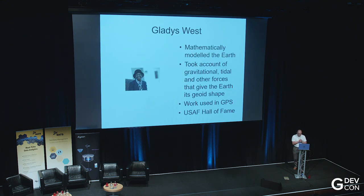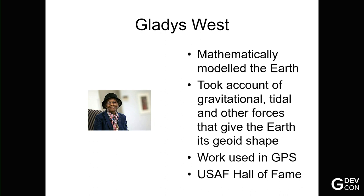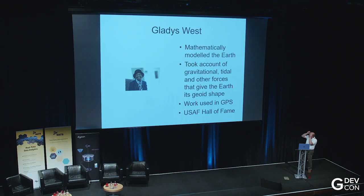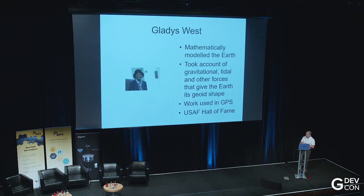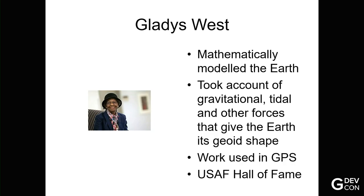This is a lady I wanted to talk about. I've forgotten the hashtag. This is Gladys West, and she did a great deal of work mathematically modeling the Earth. We think of the Earth as a sphere, but actually it's sort of an oblated sphere or a geoid, and she took account of things like the gravitational tidal and other forces that give the Earth its geoid shape. A lot of that work was used in generating the models for GPS, and she's also a member of the USAF Hall of Fame. The reason I admire her is her color and her gender have probably worked against her, but the real reason is she invented GPS, and as a result, I'm not divorced. So, thank you very much, Gladys.